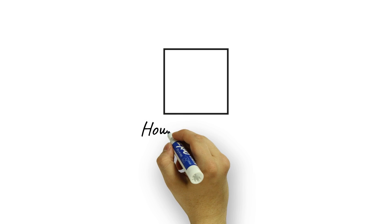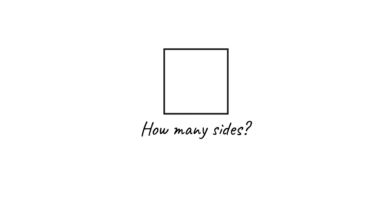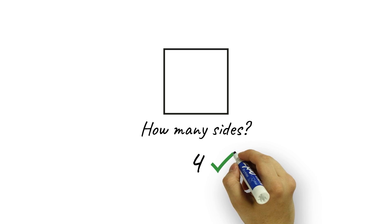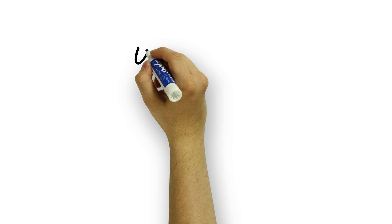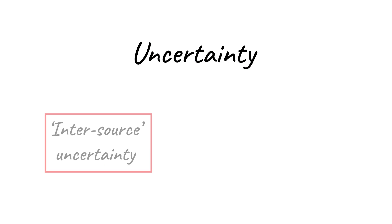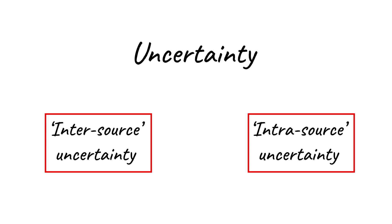Sometimes the correct response to a question is clear and discreet — the answer is both correct and complete. Often, however, the appropriate response is uncertain or vague.